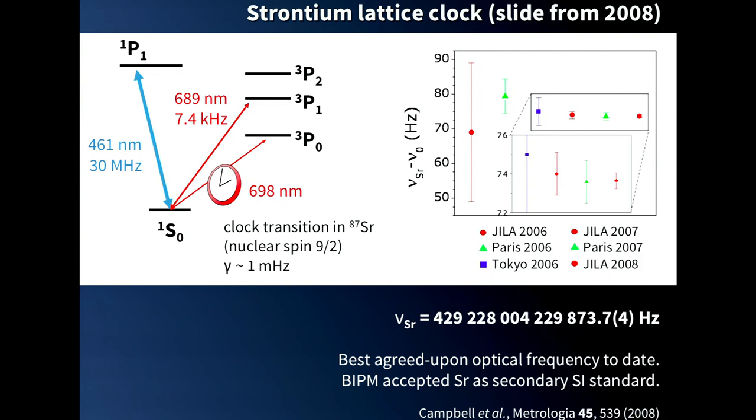The transition that caused a lot of excitement is that it's possible to build optical frequency standards based on the transition between the ground state and the first excited triplet state. This relies on hyperfine coupling in fermionic isotopes of two electron atoms. We have a nuclear spin of nine halves, which results in a linewidth that is extraordinarily narrow, about 150 seconds. Here are a few ancient results that show if you compare this frequency standard against the cesium clock, you can measure this number. This is still the best agreed upon optical frequency to date. The cesium standard is not getting much better anymore, which is why there's discussion of replacing it with an optical standard. Strontium is one of the prime candidates.